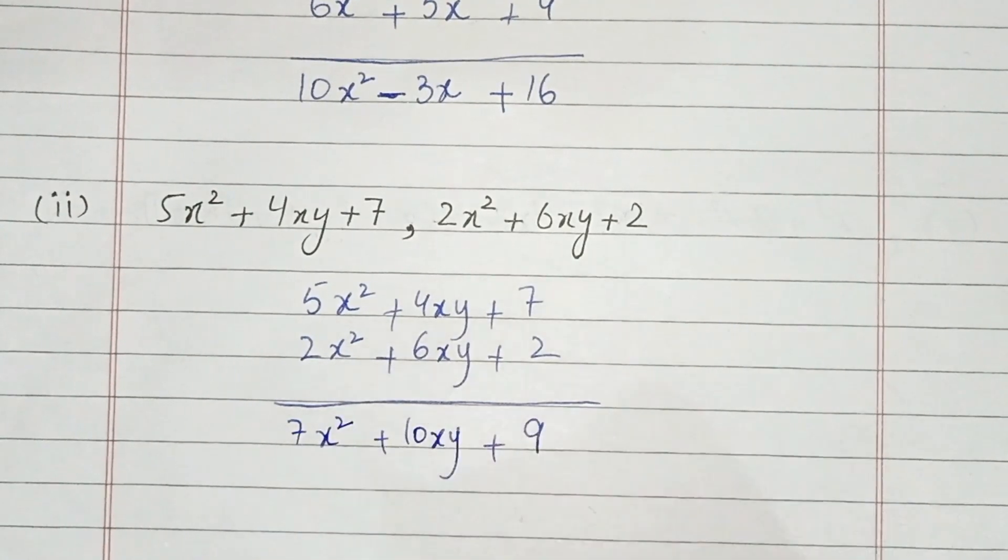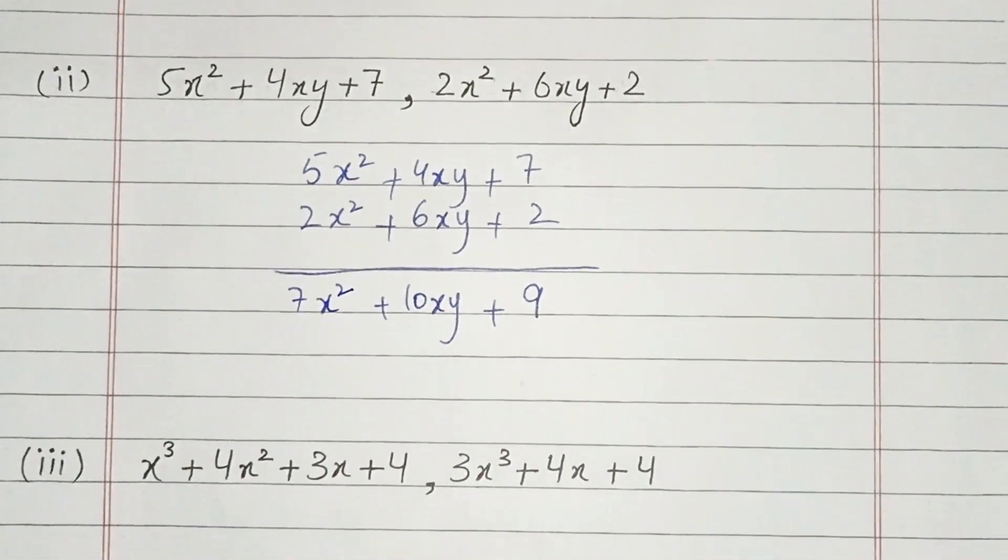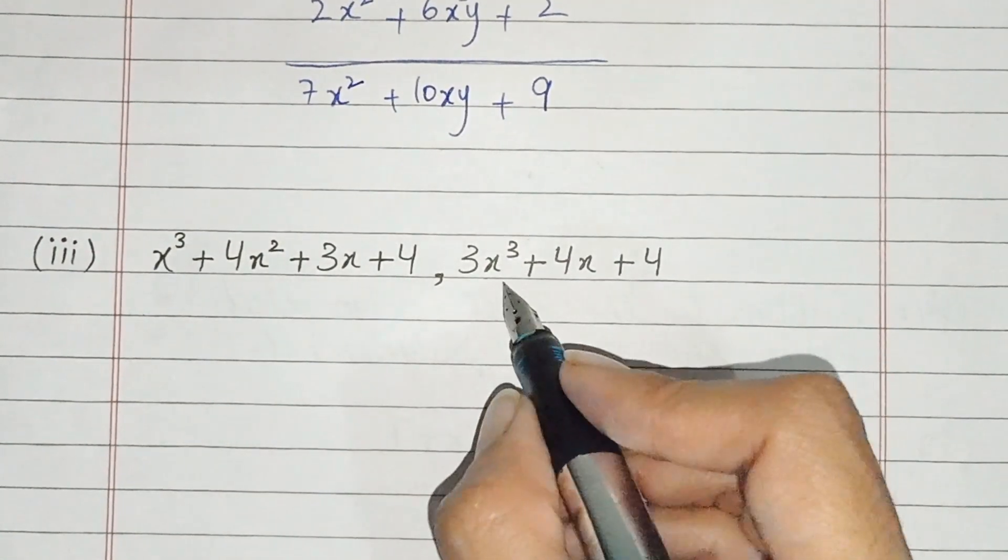Part number two: 5x square plus 4xy plus 7, and 2x square. We add like terms. 7 plus 2 is 9. This is 10xy and this is 7x square. This is the answer of the second part.